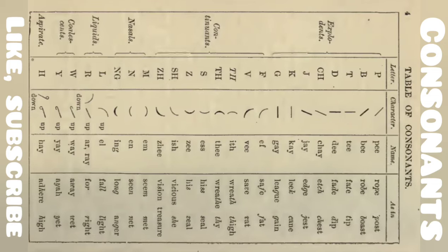Here we discuss the explanation of the table of consonants. First, explodants: P, T, D, J, K, G. These are explodants.